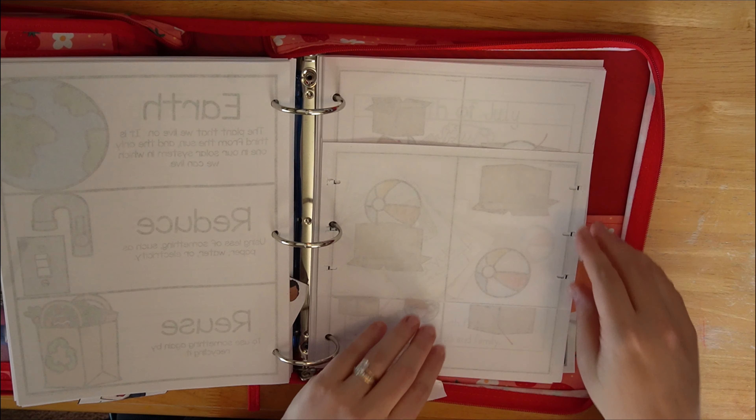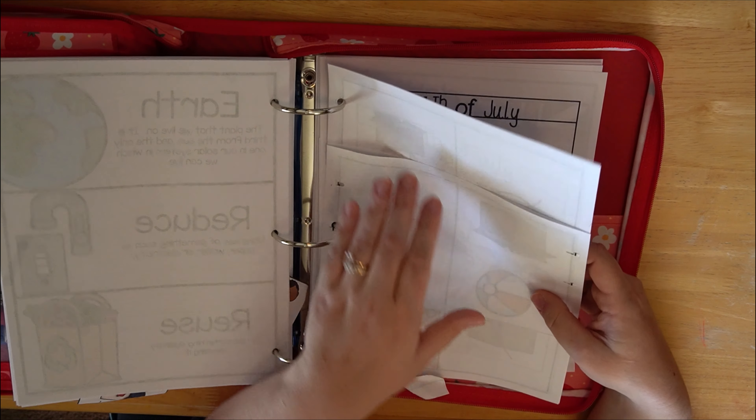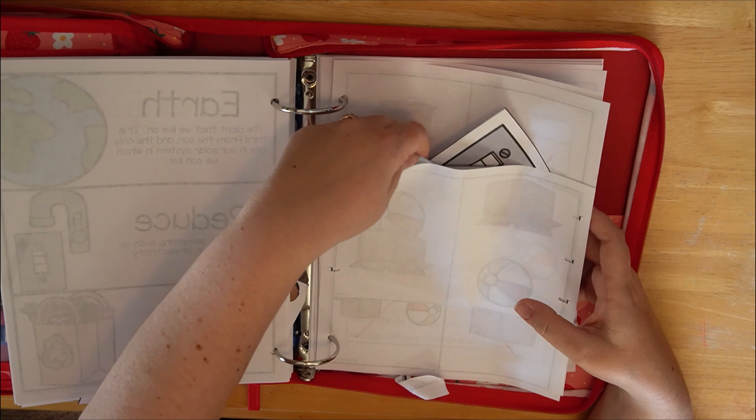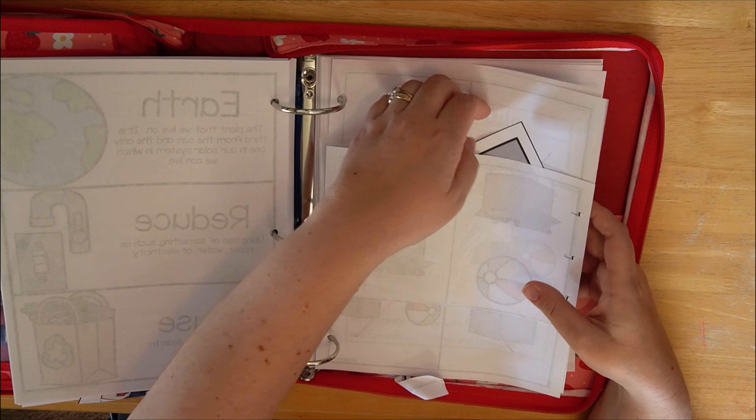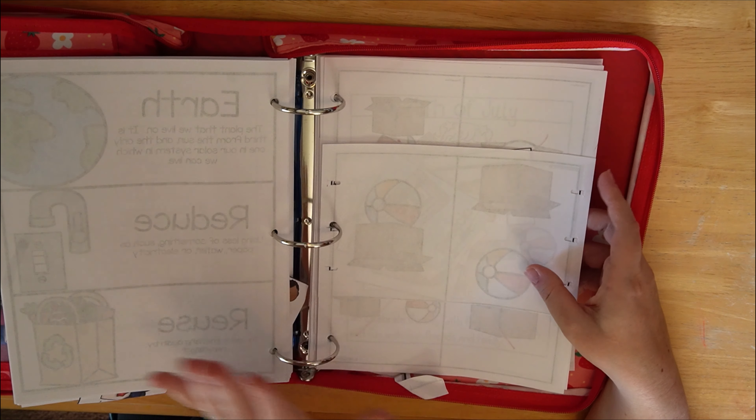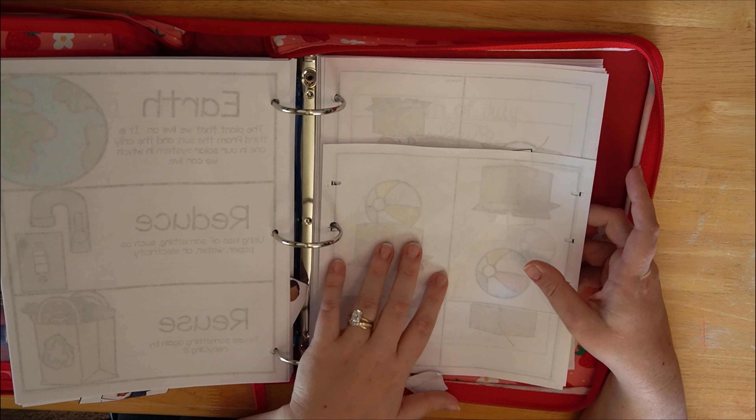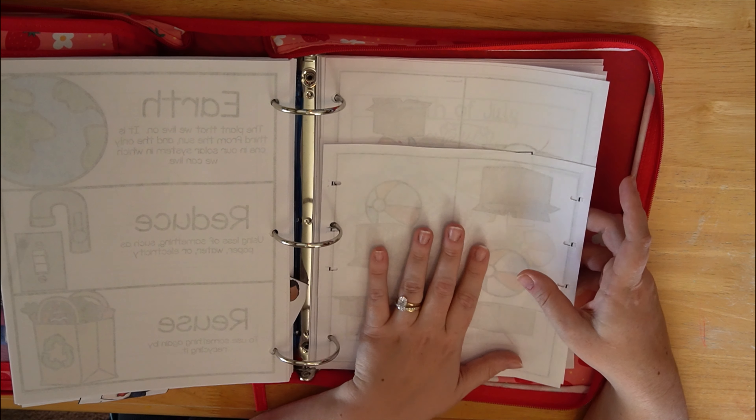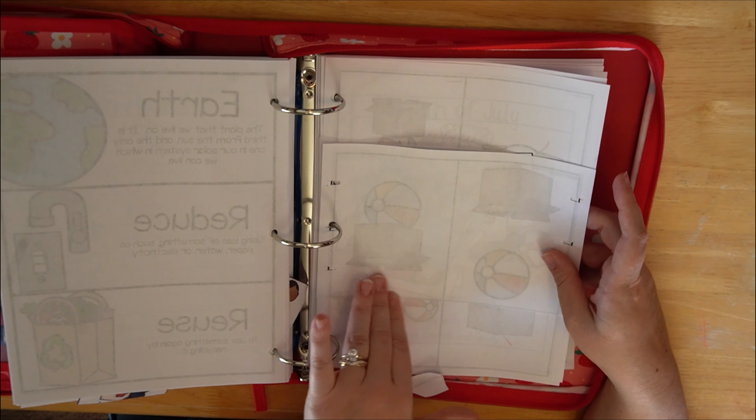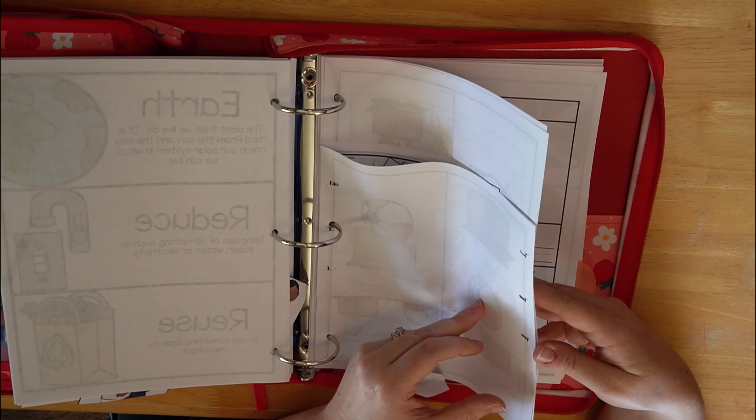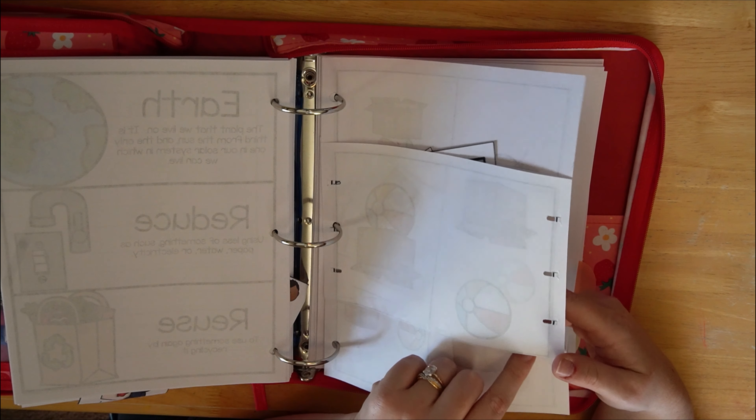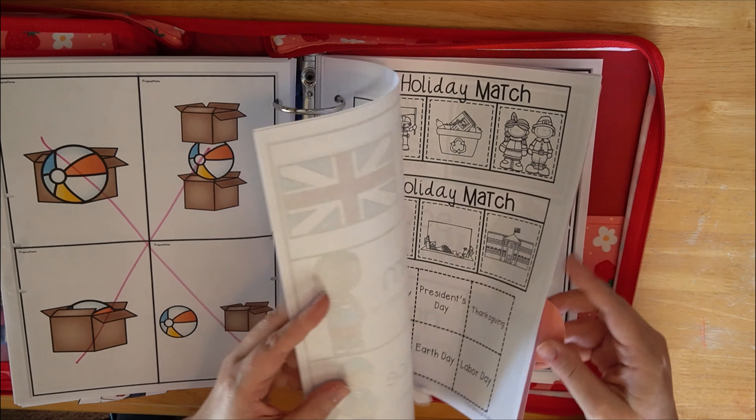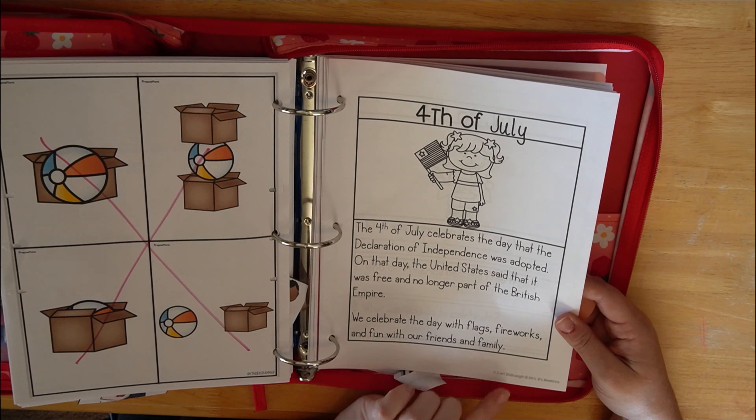So good choices versus bad choices, things like that. So that's what we have been doing. That's a look at that. So we just do one of these a day. And obviously when we get to something like this, like who do we celebrate on Veterans Day, she's not going to be able to write a sentence. That's fine, that's not the point of this.